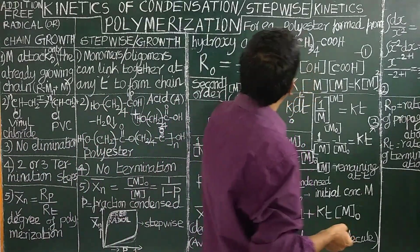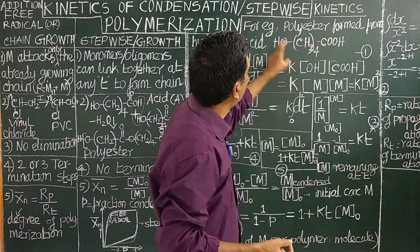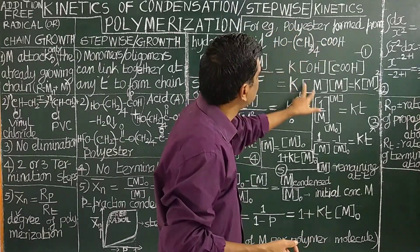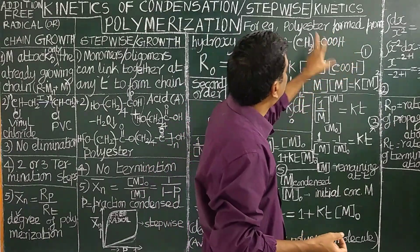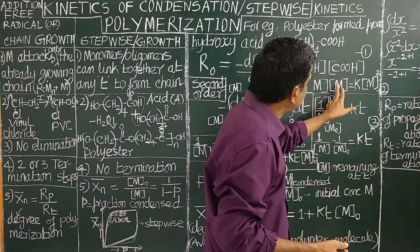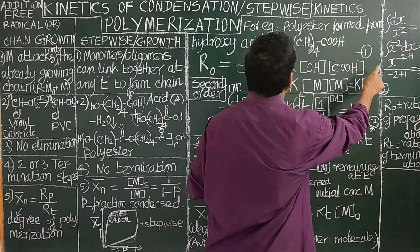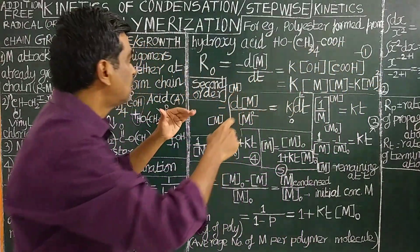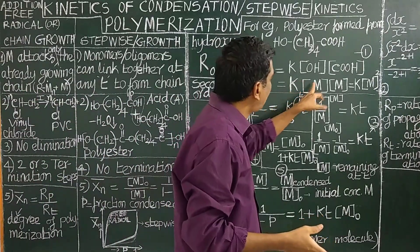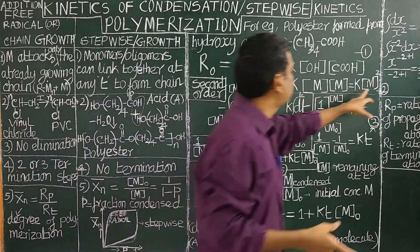For each monomer molecule there is one OH group and one COOH group. Therefore, concentration of OH equals monomer concentration [M], and concentration of COOH also equals monomer concentration [M]. So the rate equals k[M]². Therefore the overall order of the condensation polymerization reaction is 2 with respect to monomer concentration — this is important for competitive examinations.